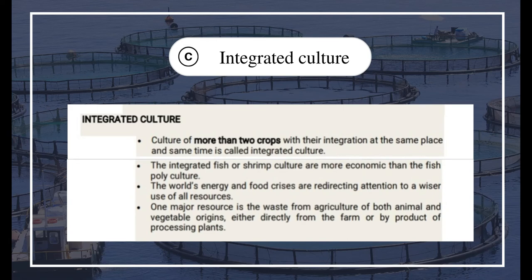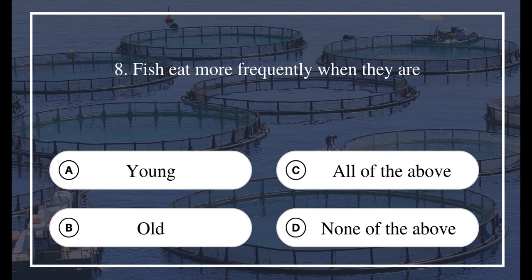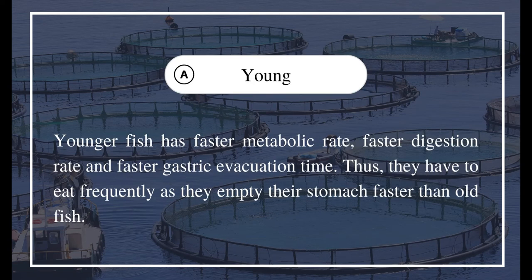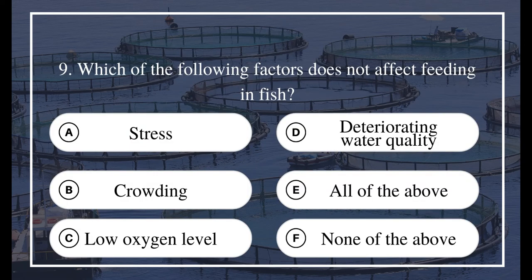Either directly from the farm or as a by-product of processing plants. Question 8: Fish eat more frequently when they are A) young, B) old, C) all of the above, D) none of the above. The answer is A) young. The younger fish has a faster metabolic rate, faster digestion rate, and faster gastric evacuation time.